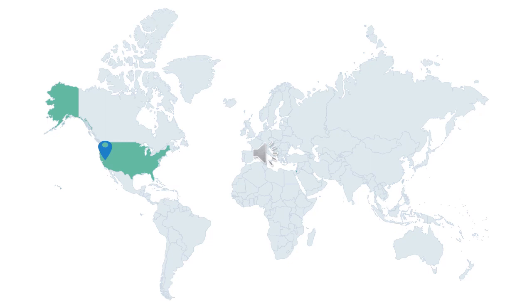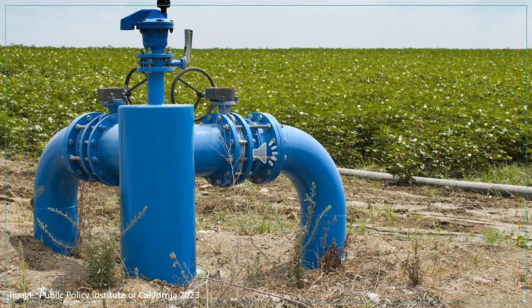In California, 83% of persons depend on groundwater for some portion of their water supply. Over-extraction has led to significant depletion of groundwater supplies, degrading water quality and rendering some aquifers unusable for drinking or irrigation. To this end, AI is being used to monitor and manage groundwater resources to prevent over-extraction in California.